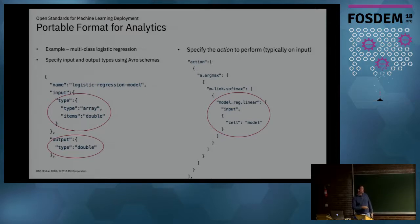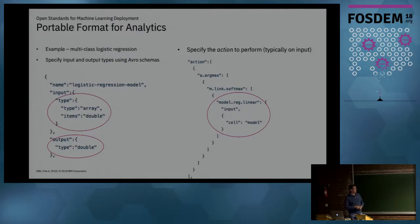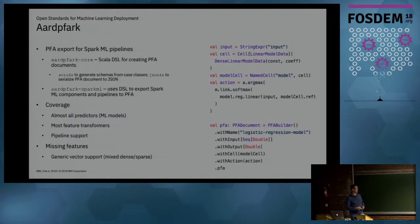This function takes the cell — which is effectively the set of coefficients — does a matrix multiplication, then softmax, link, argmax, and you're done. Despite being fairly verbose, the actual application is very simple — it's just doing the math and specifying it in this kind of DSL.